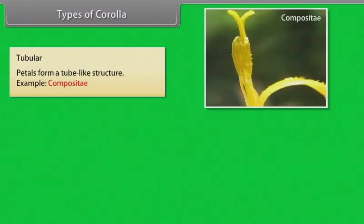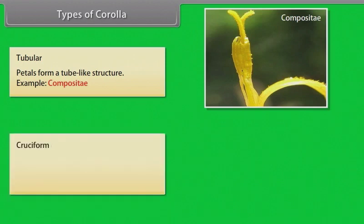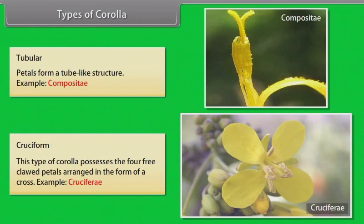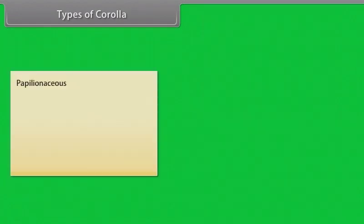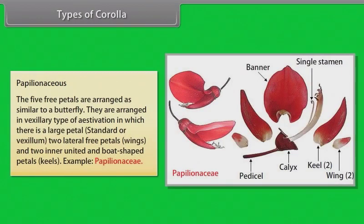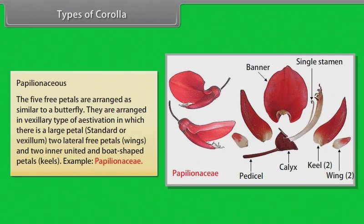Types of corolla: Tubular — petals form a tube-like structure, example Compositae. Cruciform — this type of corolla possesses four free petals arranged in the form of a cross, example Cruciferae. Papilionaceous — five free petals are arranged similar to a butterfly in vexillary estivation, with a large petal (standard or vexillum), two lateral free petals (wings), and two inner united boat-shaped petals (keel), example Papilionaceae.